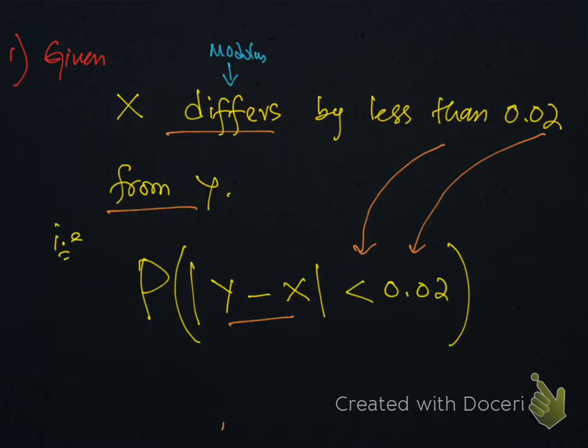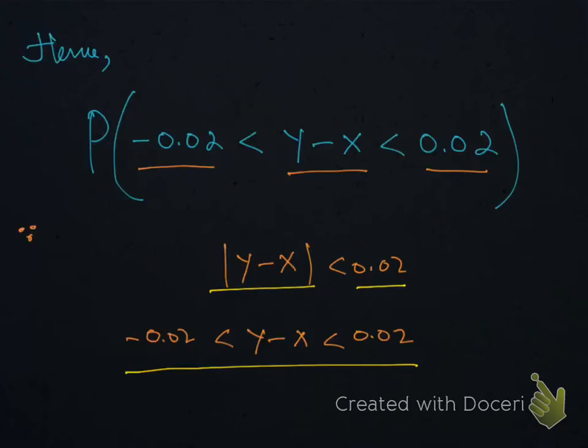Example number 1: The word 'differs' means modulus. When x differs by less than 0.02 from y, that means |y - x| < 0.02. This can be written as y - x lies between -0.02 and 0.02, because modulus |y - x| can be simplified in this way.